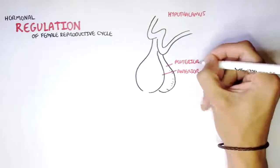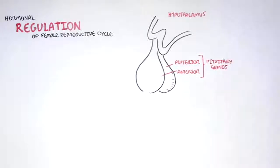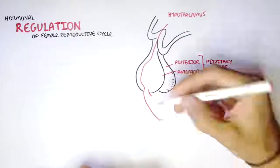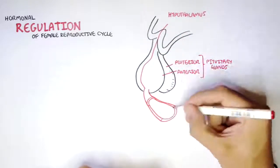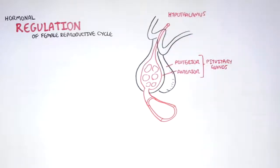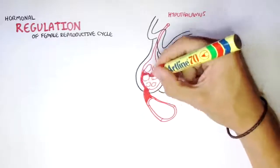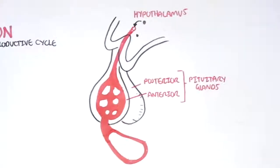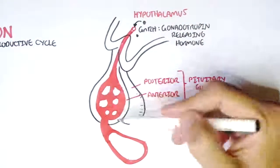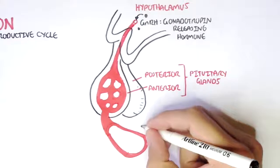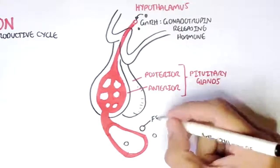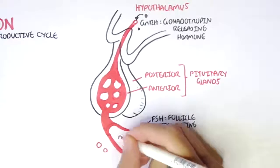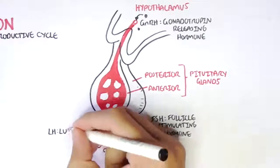We begin with the hypothalamus and the pituitary glands, which are made up of the anterior and posterior pituitary glands. We will be focusing on the anterior pituitary gland. The hypothalamus regulates hormones released by the anterior pituitary through the portal blood. In the female reproductive system, the hypothalamus produces a hormone called gonadotropin-releasing hormone, which travels to the anterior pituitary via the portal blood, causing cells there to produce two important hormones: FSH (follicle-stimulating hormone) and LH (luteinizing hormone).